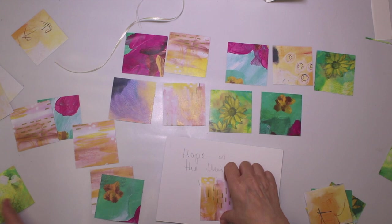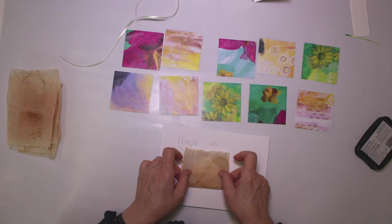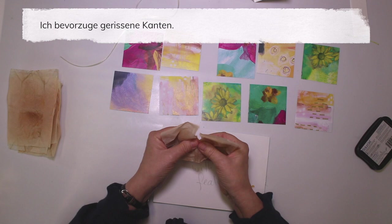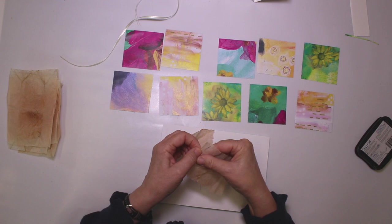Now I have these tea bags here which I'm going to tear in half. I rather want the torn edges than a straight line. And they're going to go on top, which means I also have to get rid of the side here a little bit.